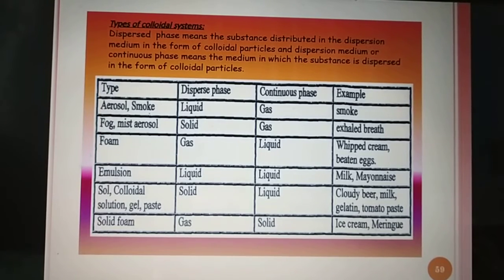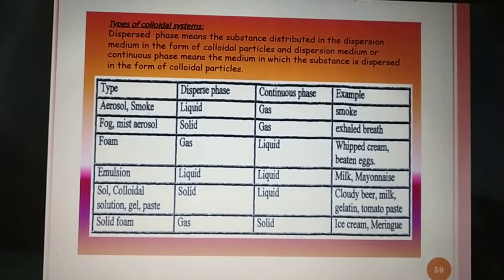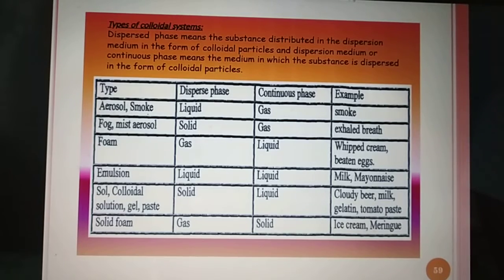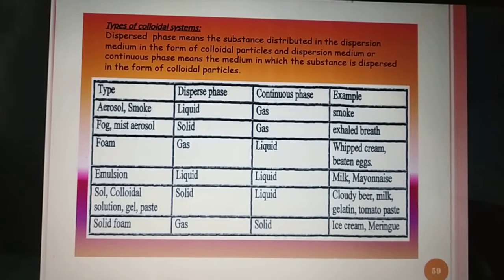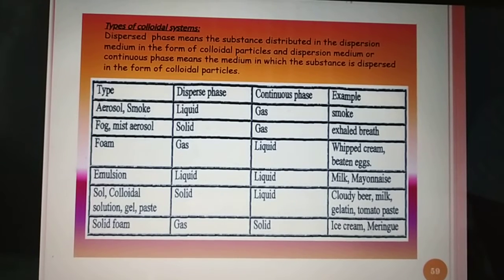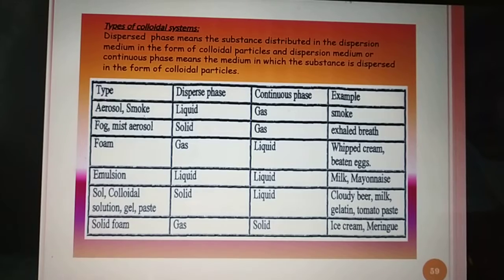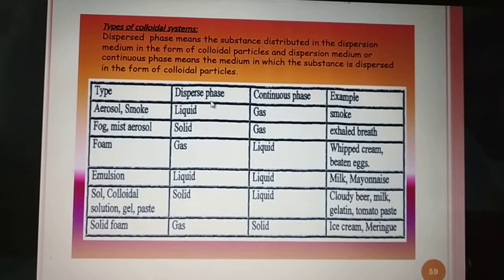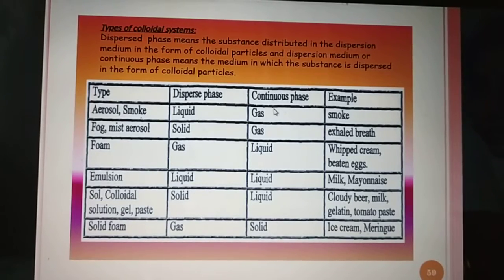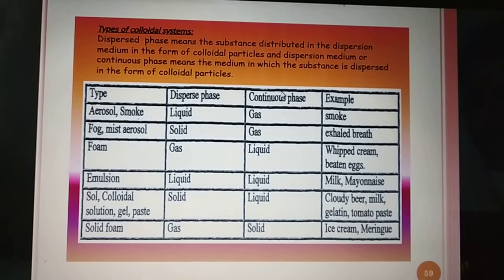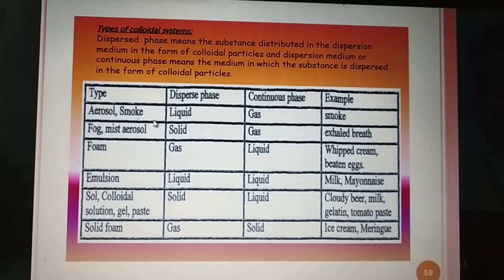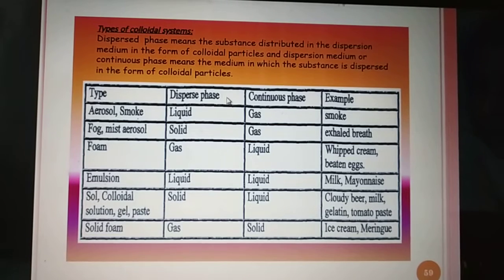Depending on dispersed phase and dispersion medium, there are several types of colloids — for example, solid sol, sol, aerosol, gel, emulsion, foam, etc. When dispersed phase (DP) is liquid and dispersion medium (DM) is gas, the type of colloid formed is aerosol. The example of this type of colloid is smoke — liquids dispersed in gas.